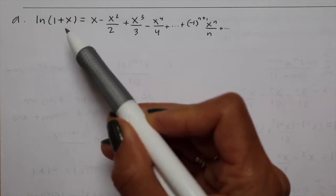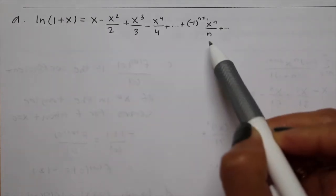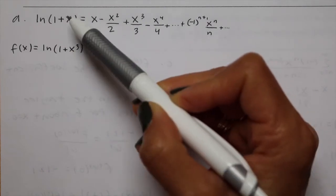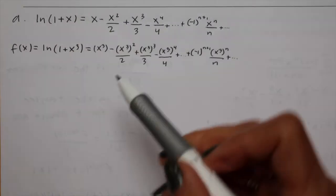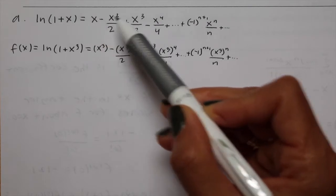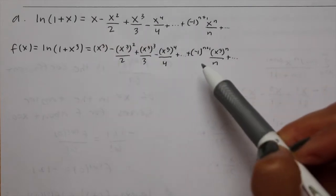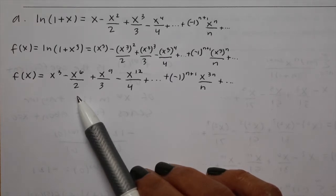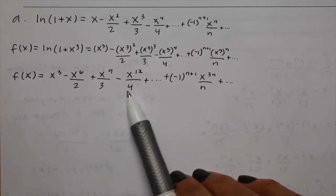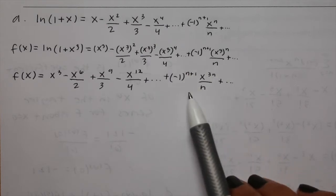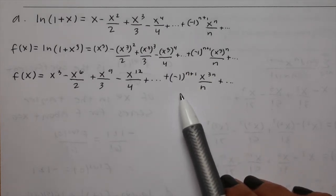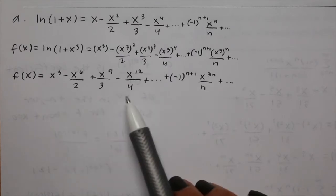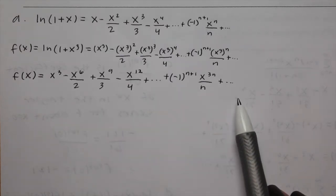We have ln of 1 plus x written out. To find f, we take x cubed and plug it in anywhere we have x. Substituting x cubed for all the x's and simplifying, for f we get x cubed minus x to the 6th over 2 plus x to the 9th over 3 minus x to the 12th over 4, with general term negative 1 to the n plus 1 times x to the 3n over n. Those are the four non-zero terms and the general term for f.